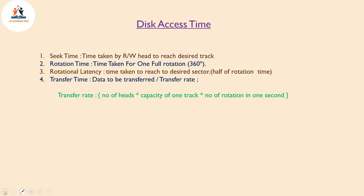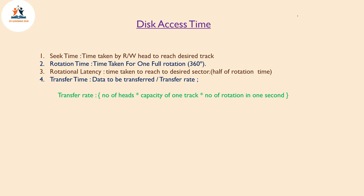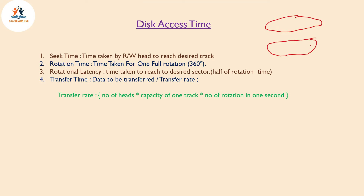I wanted to explain the disk architecture. In the disk architecture, there are platters. One disk is set on a spindle. In this spindle, the platters are rotated. It is connected to a read-write head, and we can access this read-write head for reading and writing.